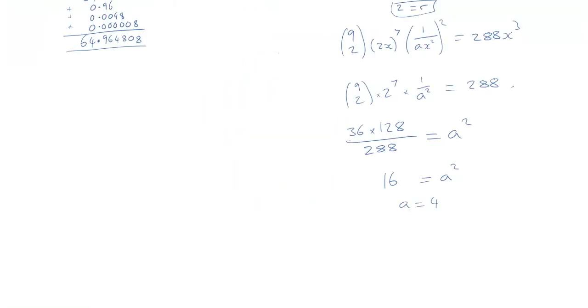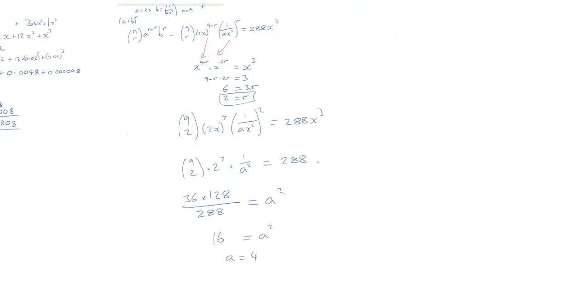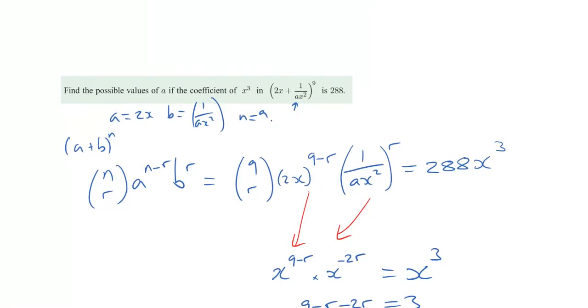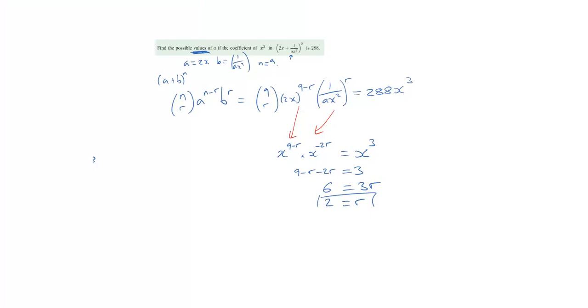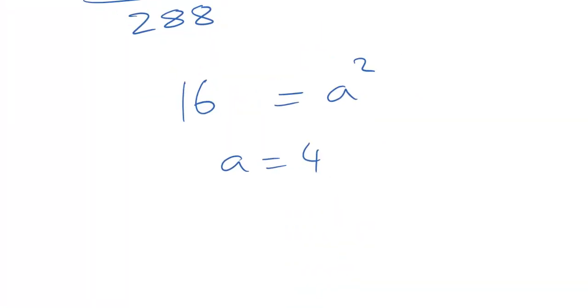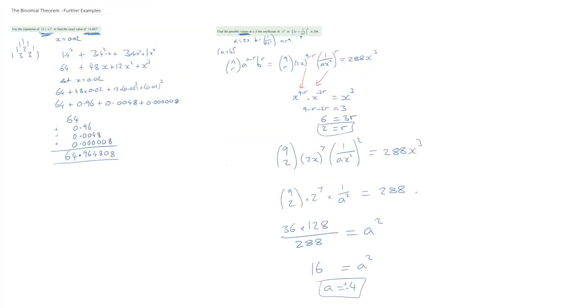Now, going back to the question, I have made a mistake. Can anyone work out where it is? Let's read the original question. Find the possible values of a for the coefficient of x cubed in this expression. Values, right? There are different values. Now, I found one of them, 4, but be ever so careful. Look out for that wording because if I square root, I could have had plus or minus 4. And that will be my answer.